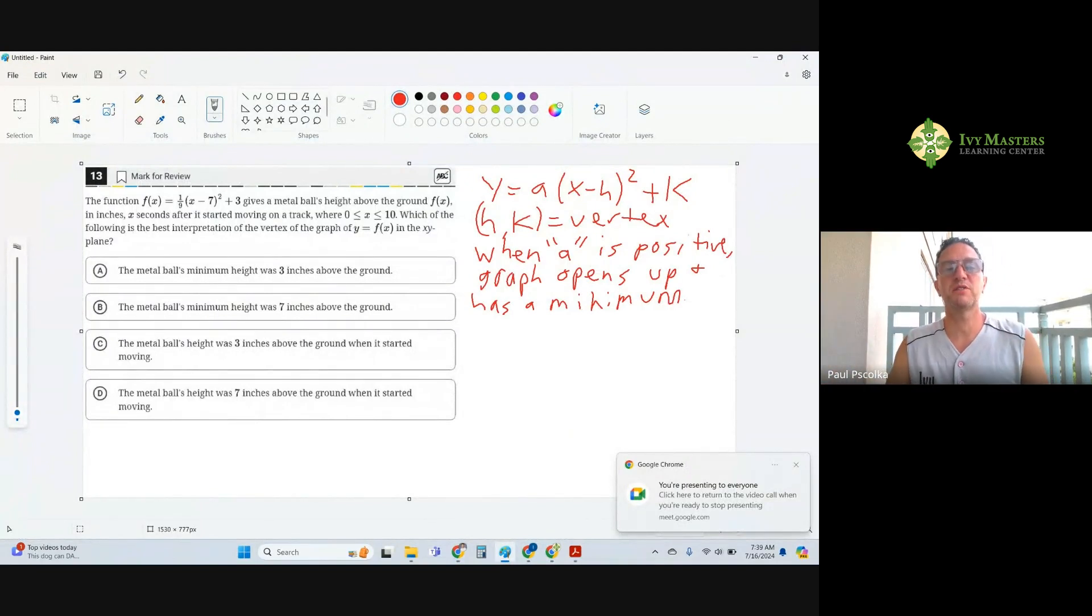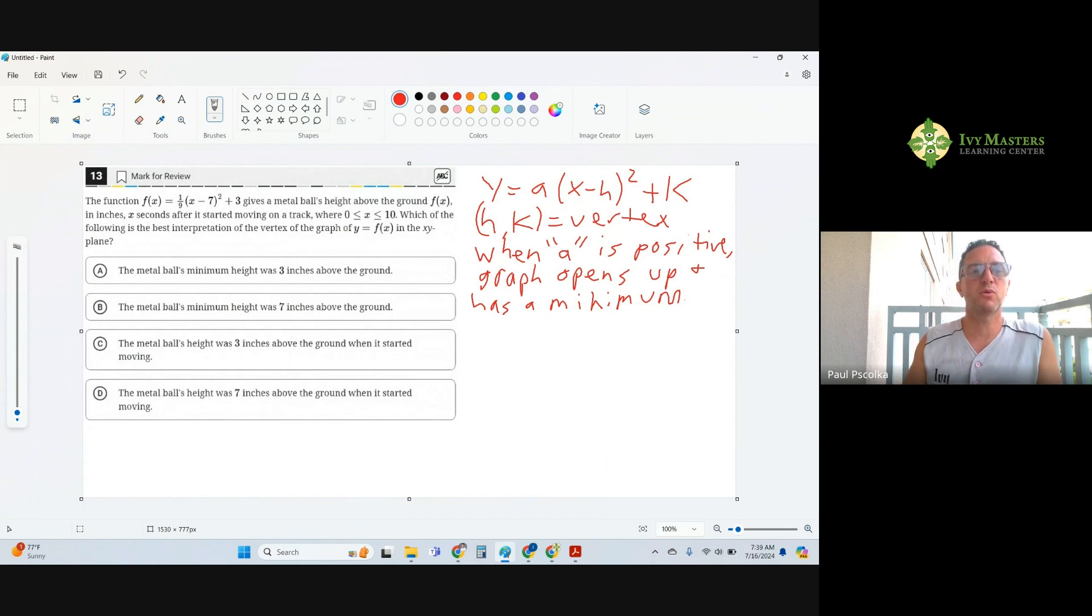This is the 13th question from Digital SAT Test 2, Module 2B, from the harder set of math questions. Number 13 gives you a function and tells you that x is the number of seconds, and it's looking for the interpretation of the vertex.